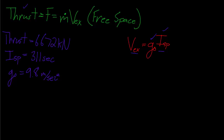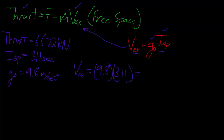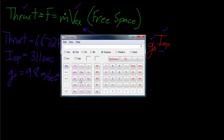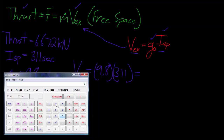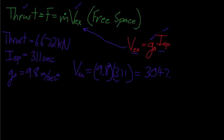We also have a thrust, so we can substitute the calculated exhaust velocity into the thrust equation. Since we know all of our variables for the thrust equation except for the mass flow rate, we can calculate that as well. First, we'll use the exhaust velocity equation: exhaust velocity equals 9.8 meters per second squared multiplied by 311 seconds, which gives us an exhaust velocity of 3,047.8 meters per second.